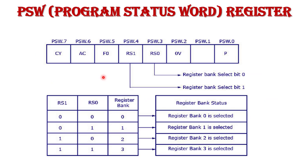This is the PSW Flag Register — the Program Status Word register. As already mentioned, it is an 8-bit register containing 8 bits, from PSW0 to PSW7. Each bit contains status information.